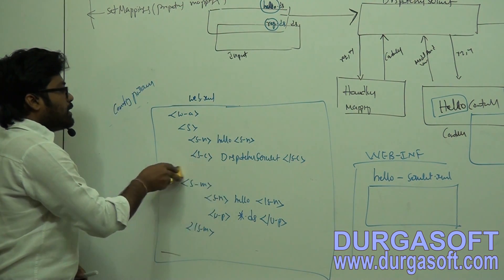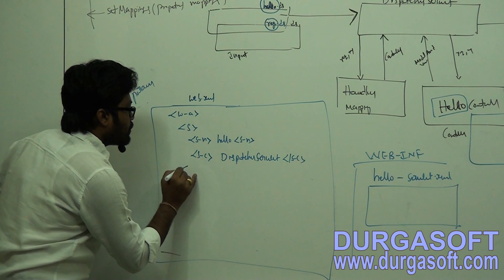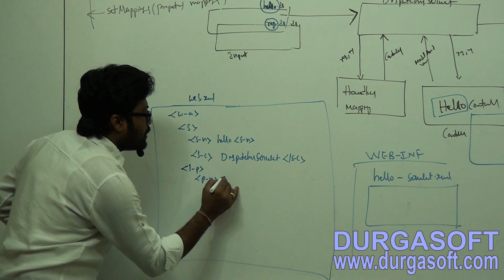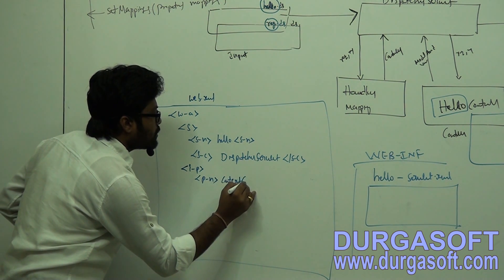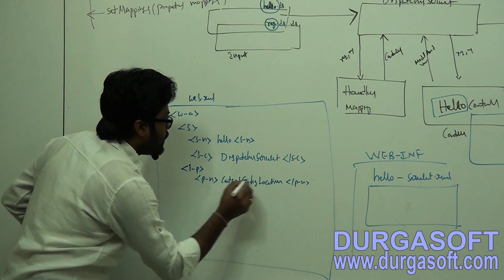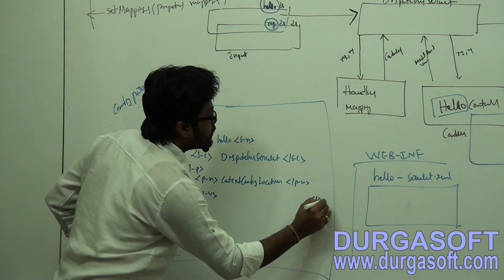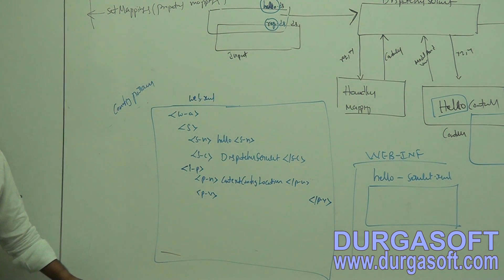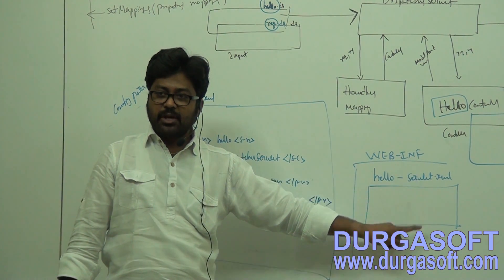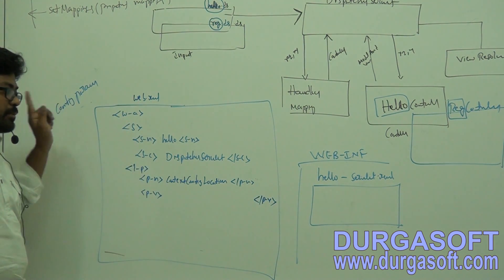In case of configuration parameters, you should configure one init parameter in between servlet and servlet closing tag. The init parameter name you should use is 'contextConfigLocation' and in the parameter value you can pass any number of XML file locations. We can have two types of locations: classpath locations and web-inf locations.